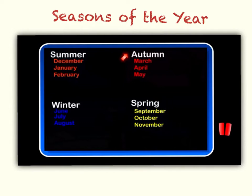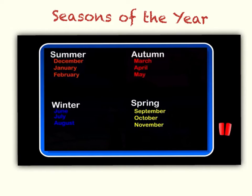Next we have autumn. We are in autumn now — that is the season that we are currently in, because those months are March, April, and May. In autumn, as we saw in the video, it starts to cool down and the trees tend to lose their leaves. When you go back out to the playground for lunch and morning tea, see if you can see any of the trees losing their leaves. You will know then that the season we're in is autumn, because it is cooling down and the trees are losing their leaves and preparing for winter.